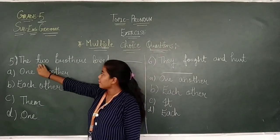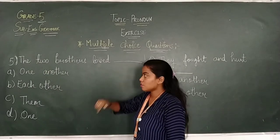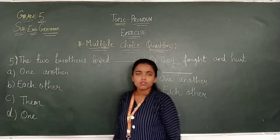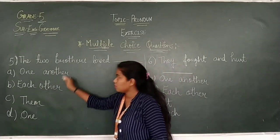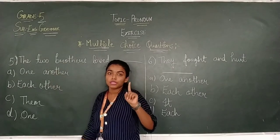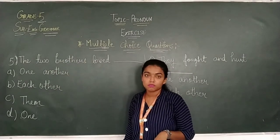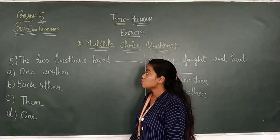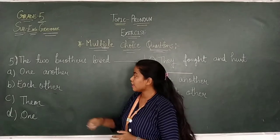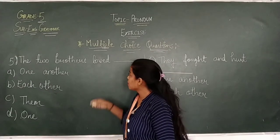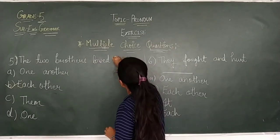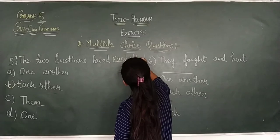Now students, number fifth. The two brothers love dash. So our first option is one another, each other, them or one. So let's apply all the pronouns in this. First of all, you have to see that brothers. Here we are talking about the two brothers, not only one. Brothers, again it is in the plural form. Let's apply, more than one. So which we will use? Each other. Ek dusre ko, what? So which pronoun we will use? Because the plural form is there, every time we have to keep it in mind. Each. What will you write? Each other.